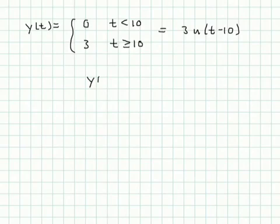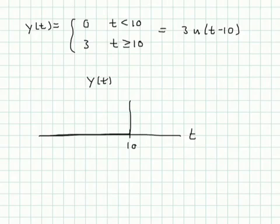So we can do a sketch of this. If we sketch y(t) down here, then it looks like this as a function of t. So here's 10, so it's 0 up until 10, and then it jumps up to 3 at 10, and it stays at 3 for the rest of time.